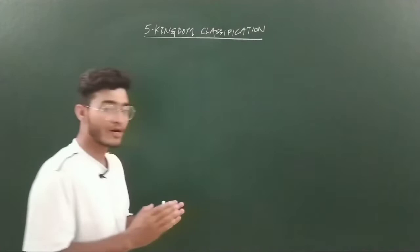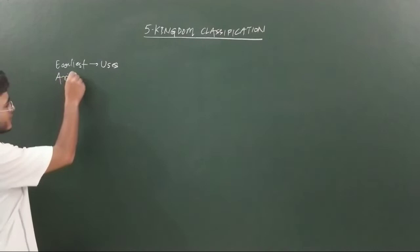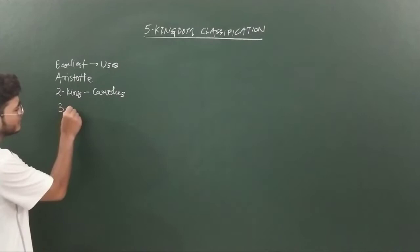So far we have covered the earliest classification which was based on the uses of organisms, after that we talked about the first scientific type of classification given by Aristotle, and then the two kingdom classification given by Carolus Linnaeus.